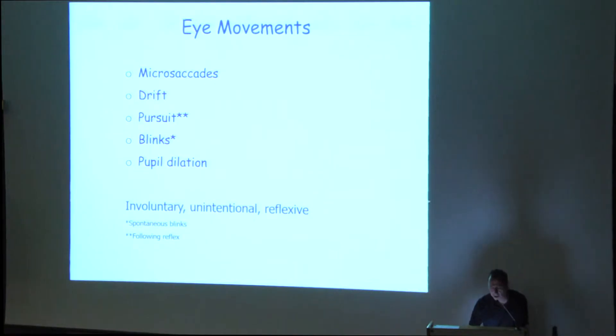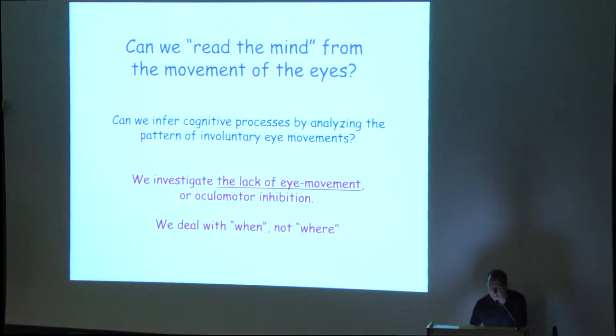This is a recording. The yellow here is a recording of the eye movement while the subject is fixating. This experiment was done to see what happens when something disappears. You may see the disappearance of this patch. Anyway, the eyes move a lot, quite a lot, and the patch may disappear. We have these movements. They are the microsaccades, the drift. Pursuit could be voluntary, but sometimes it's a reflex. Blinks can be spontaneous. And the pupil dilates. In all these cases, it's unintentional, reflexive, and involuntary. And the question is, can we sort of read the mind from the movement of the eyes?